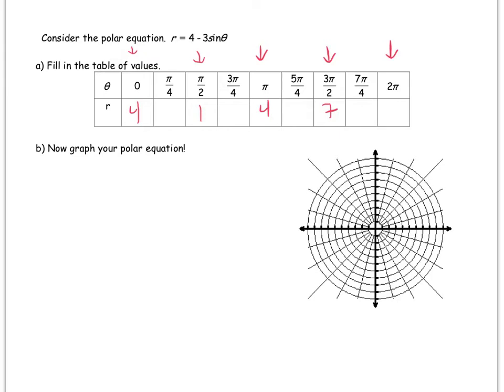And 2π: 4 minus 3 times sine of 2π is 4 minus 3 times 0, which is 4. For the other ones, we punch them in our calculator. 4 minus 3 times sine of π over 4 returns 1.87. Same thing when you plug in 3π over 4. 5π over 4, when you plug it in, you get 6.12. And 7π over 4, you also get 6.12.